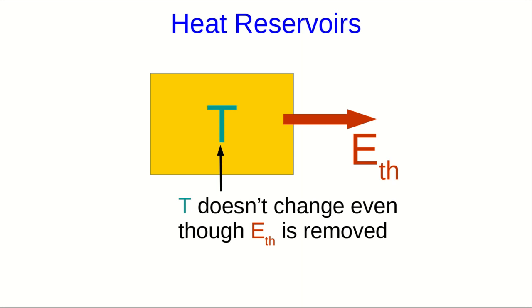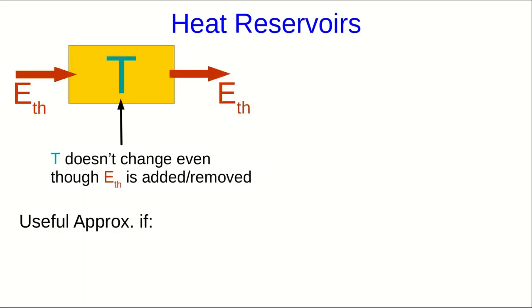Now, no real object works this way. However, it can be an extremely good approximation. One situation where treating an object as a heat reservoir is a good approximation is if we're talking about an object that has a very large heat capacity, so that when we add thermal energy, its temperature does change, but negligibly.